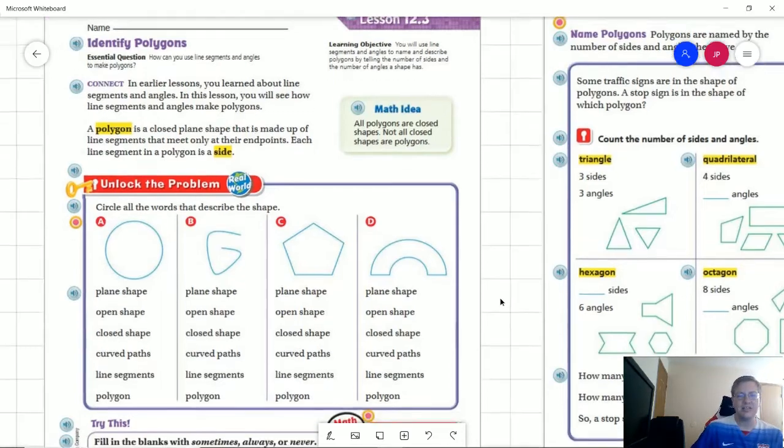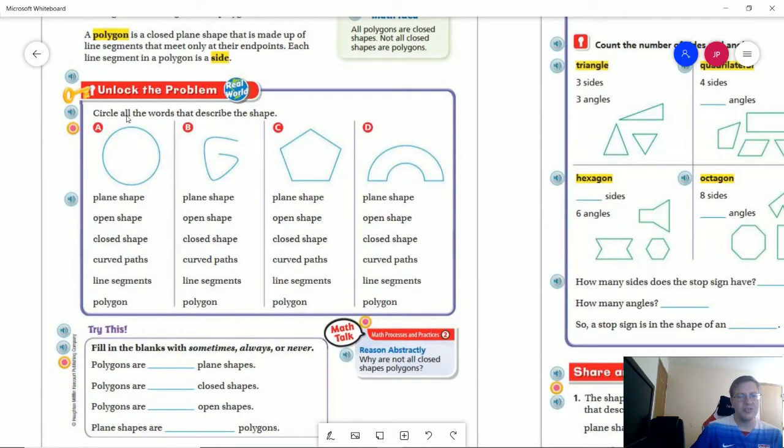So let's take a look at the unlock the problem. I want you to take a look at all four of these shapes and see which things that we can say about them.